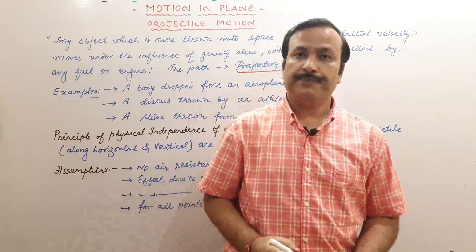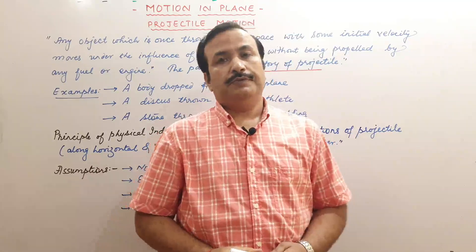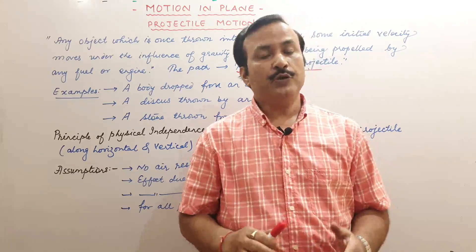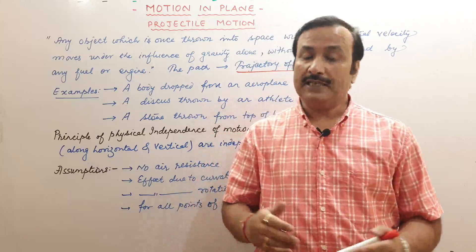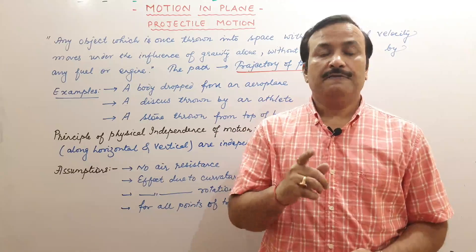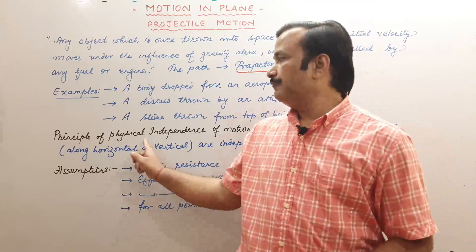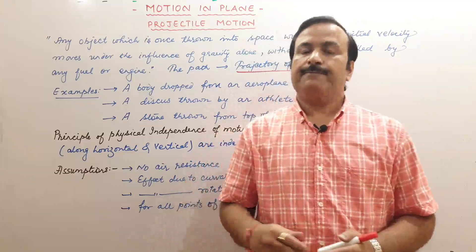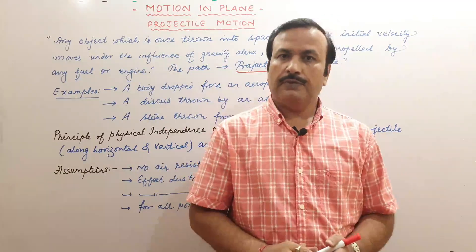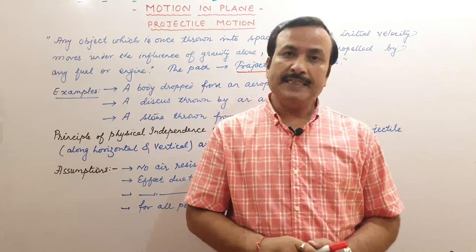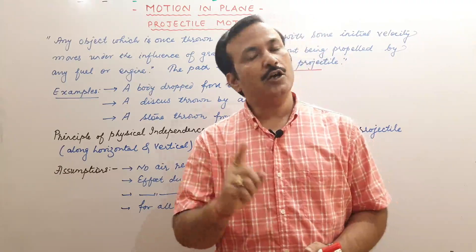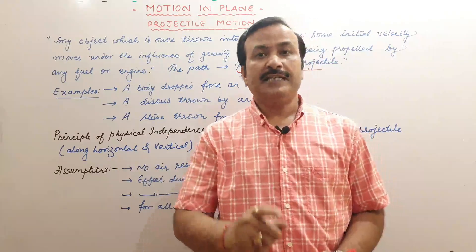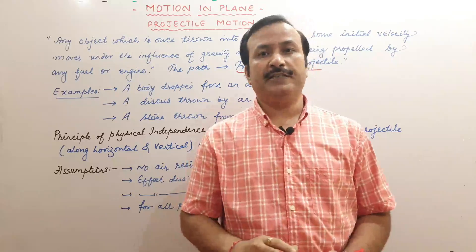The path of the projectile is called the trajectory. Now when we talk about projectile motion, there are a few things to understand. First: the principle of physical independence of motion. When any object is thrown, there are two types of motion — one is vertical motion and another is horizontal motion. This principle says both motions are independent of each other.